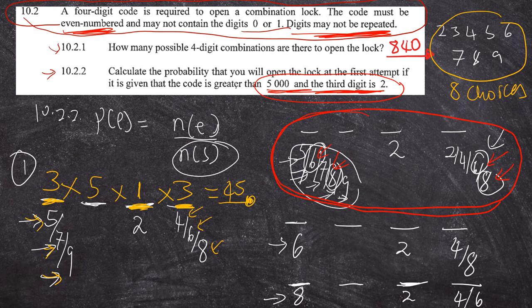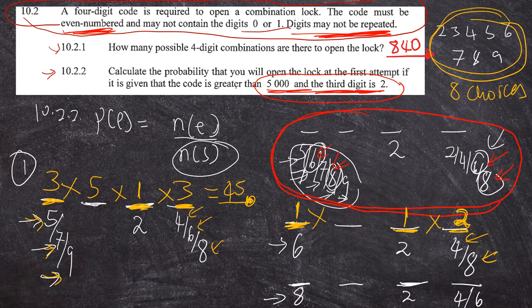For Case 2 (first digit is six): one choice in the first position, two choices in the last position (four or eight — can't use six again or two which is fixed in third position), one choice in the third position (two), and five choices remaining for the middle position. So Case 2 gives 1 × 5 × 1 × 2 = 10 codes.